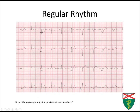Looking at a normal ECG, we can see it's a regular rhythm — the R-to-R intervals are pretty much constant and we can march them out. We also see a P-wave before every QRS, and this P-wave is positive in lead 1, lead 2, and lead 3.